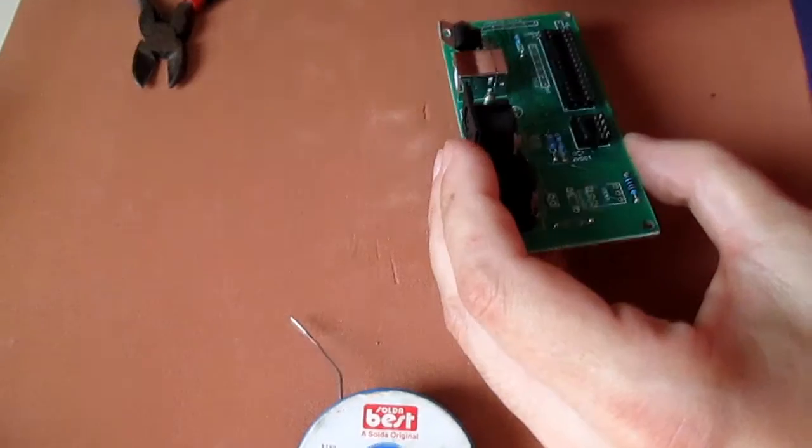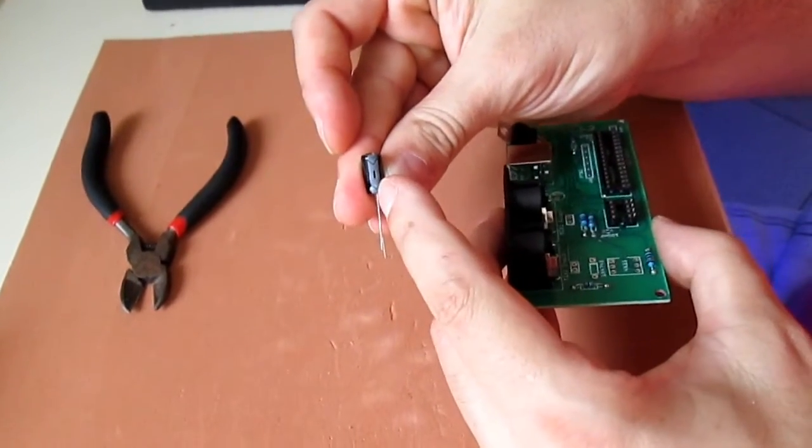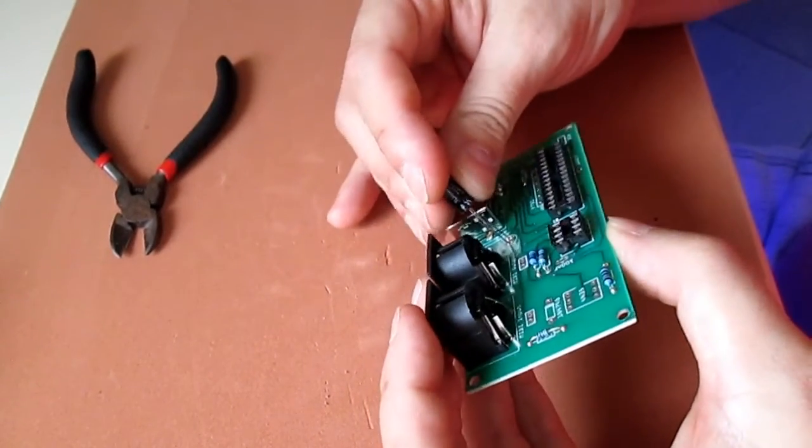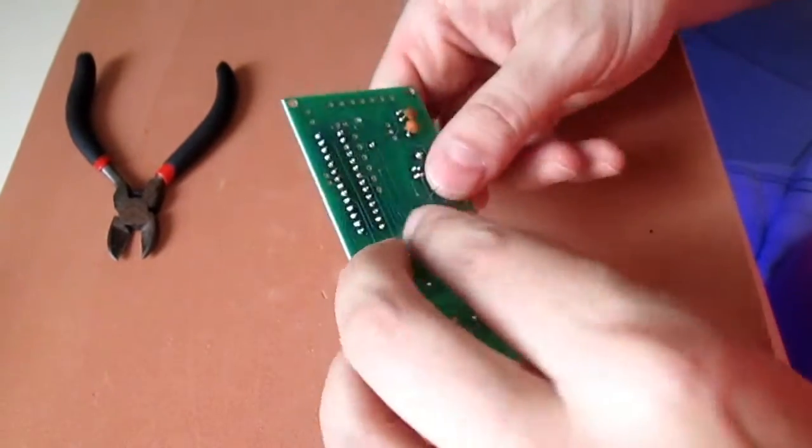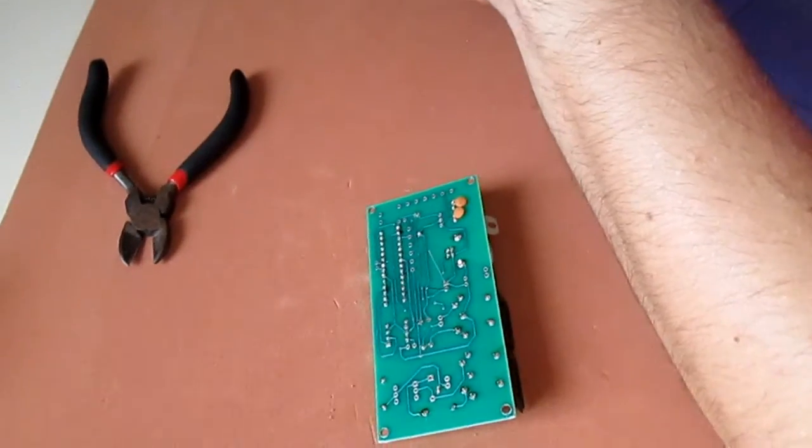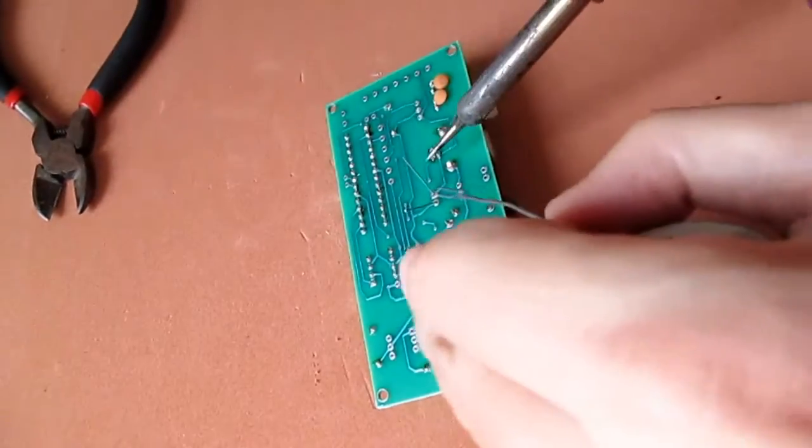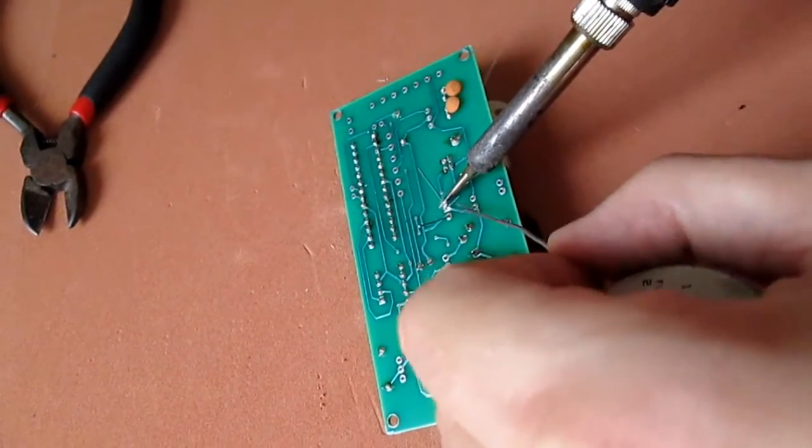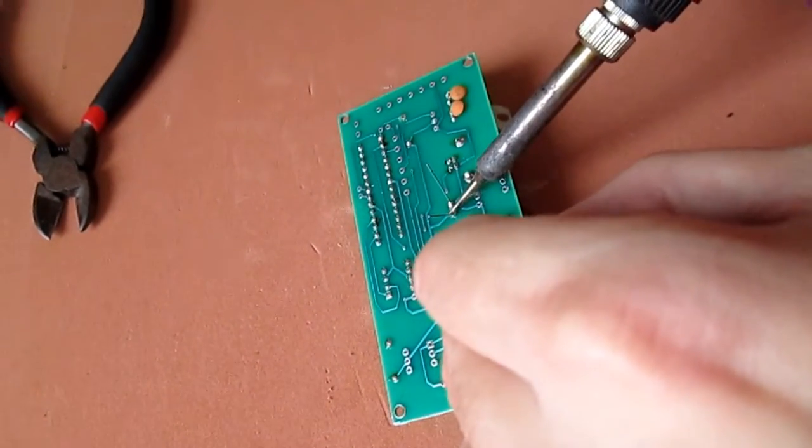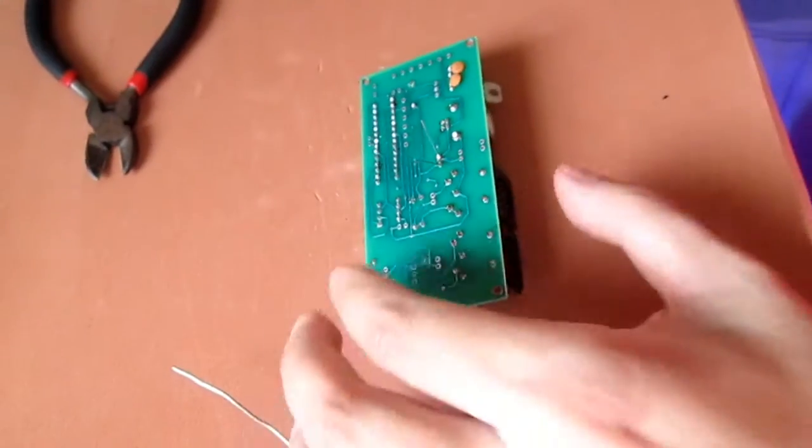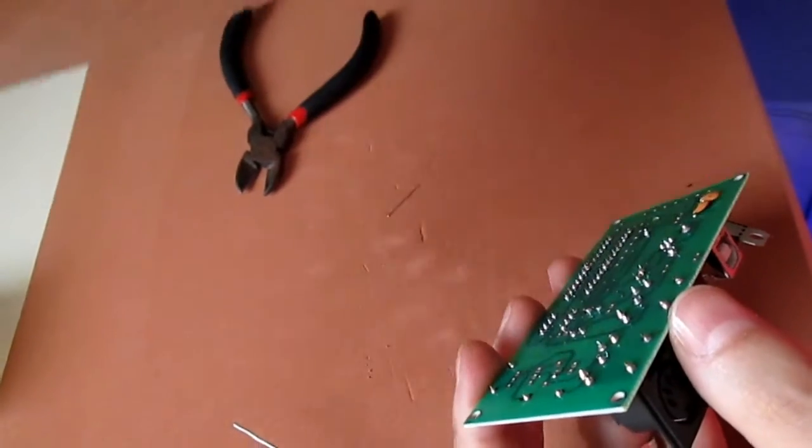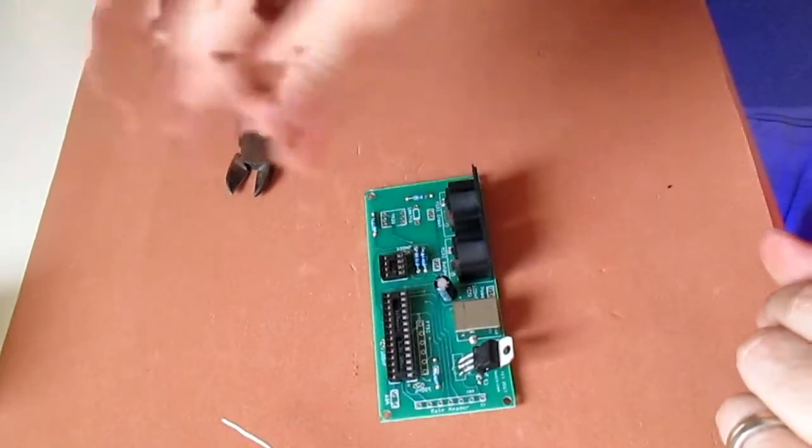So this is the electrolytic capacitor. It has a minus, and it goes on the minus on the board. Be very careful with that, otherwise the board is going to short and the capacitor can even explode if you short it with a lot of current. In this case I don't think it would, but... almost. Okay.